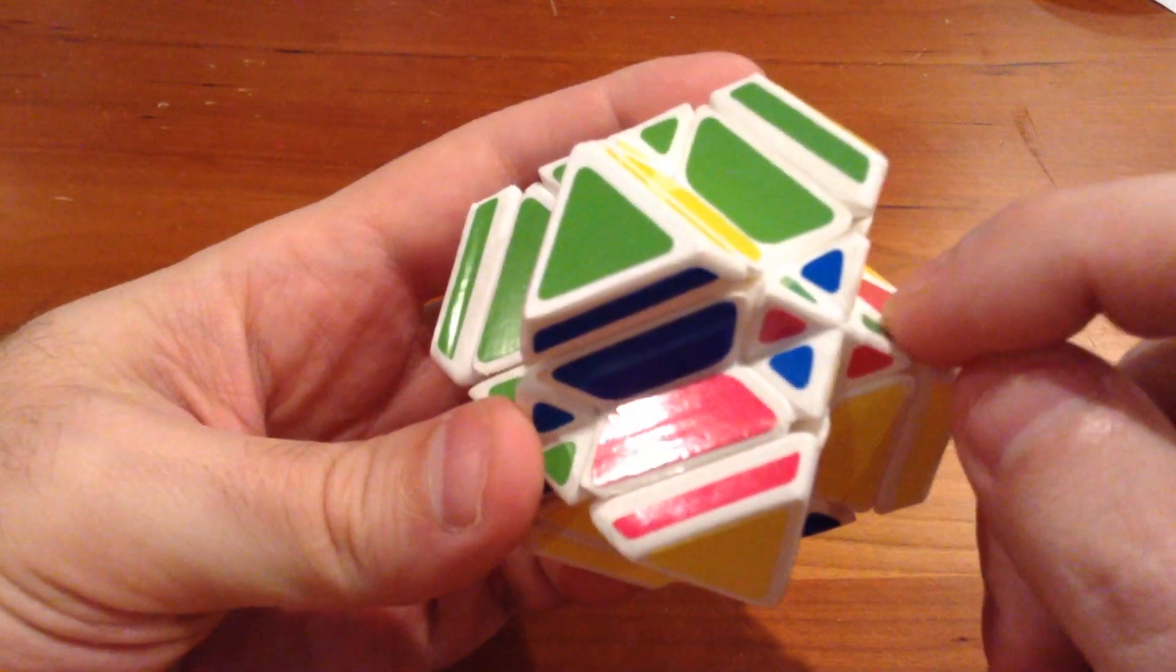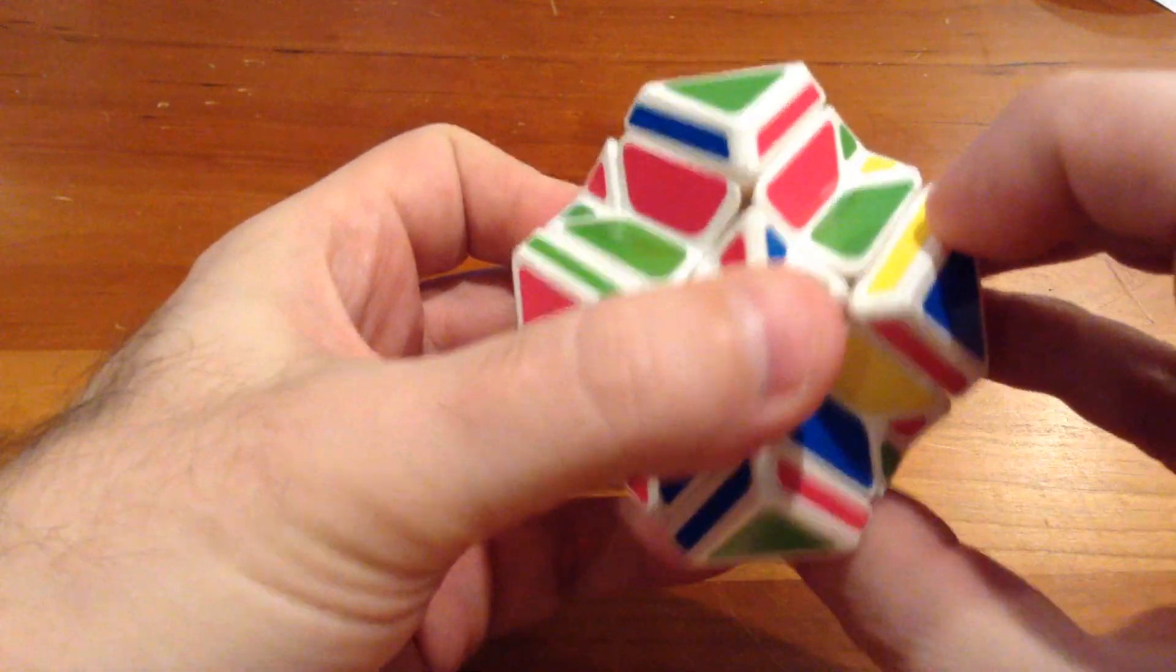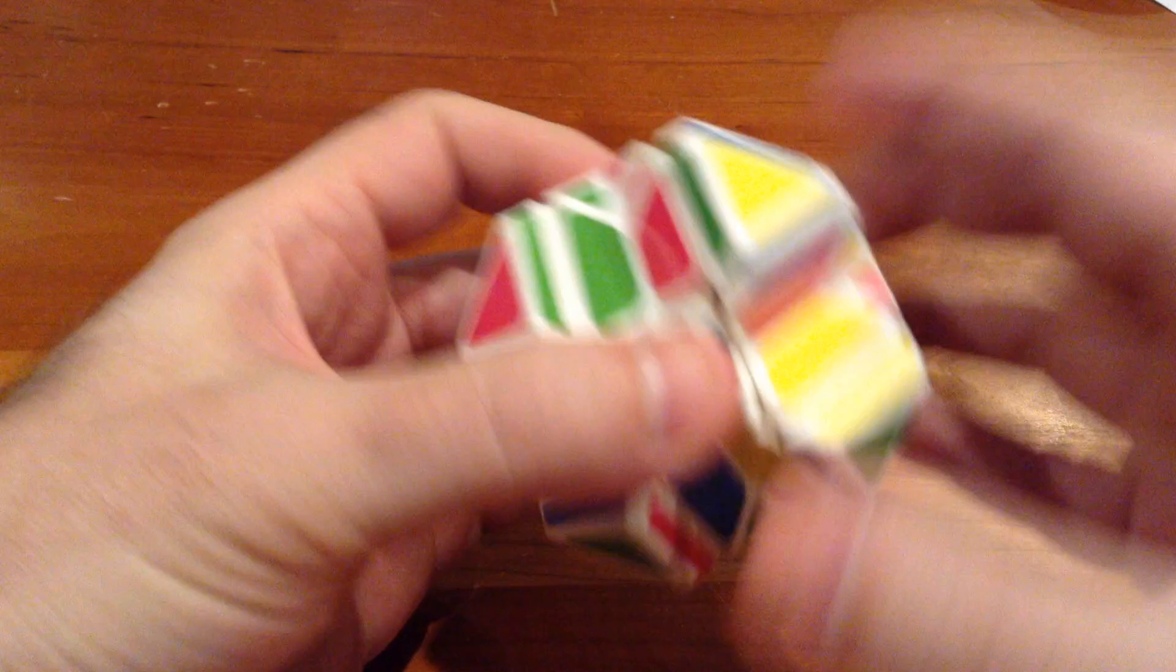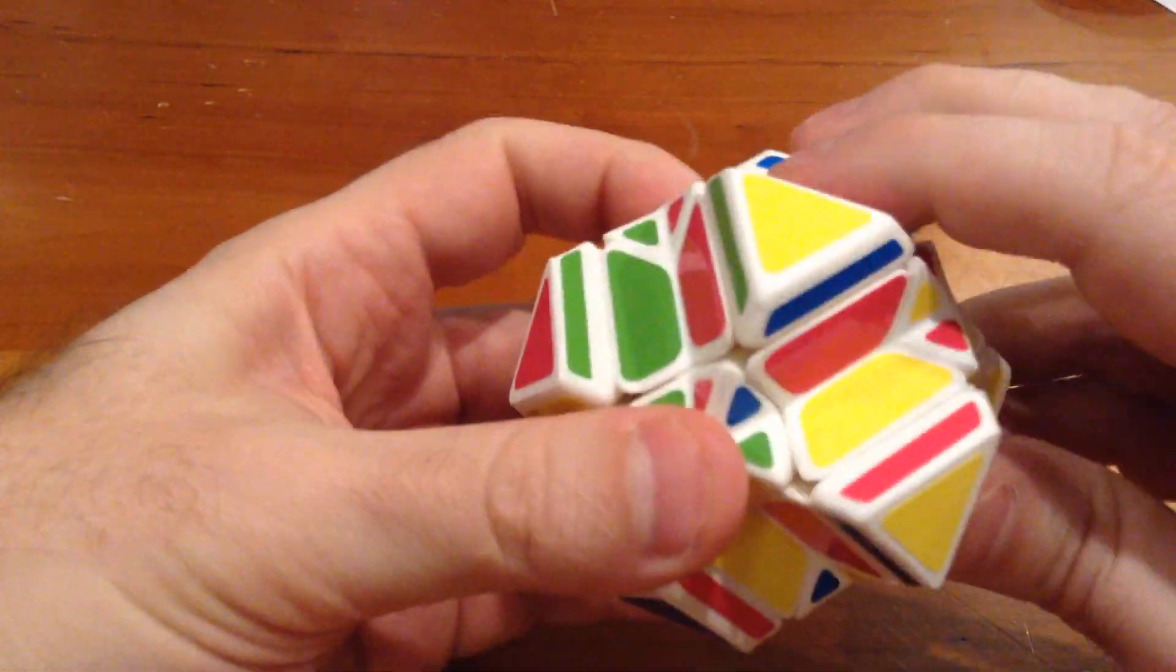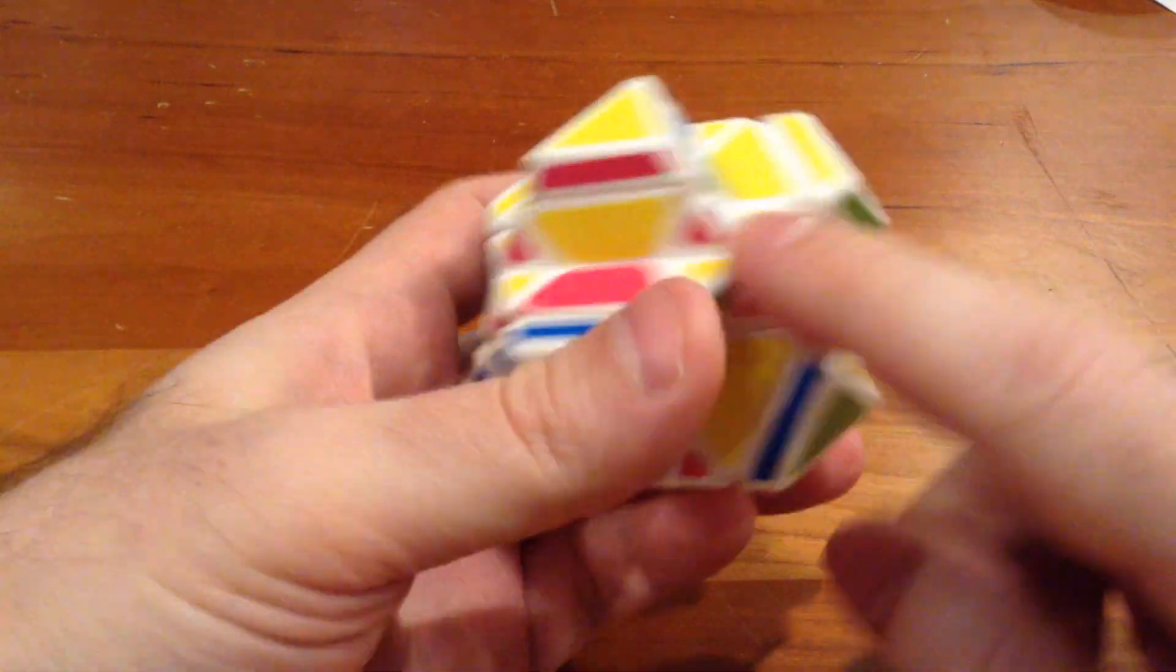And then finally, this one needs to go 90 degrees towards me. So I'm going to take my 180, 180 towards me, and then put them back. And at this point, we've got all of our centers oriented. And we're ready for our edges.